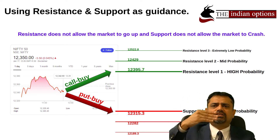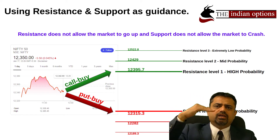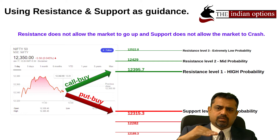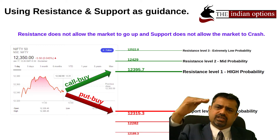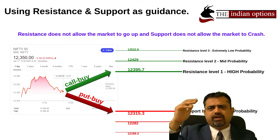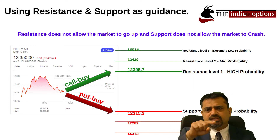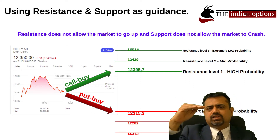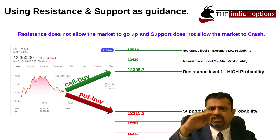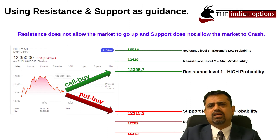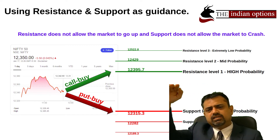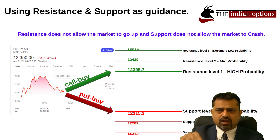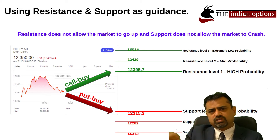Every day the market releases three figures: Resistance Level 1, Resistance Level 2, and Resistance Level 3, and Support Level 1, Support Level 2, and Support Level 3. The chances of hitting the first resistance are very high — around 60 to 70 percent of the time the market could actually hit the first resistance. In rare situations it might cross that and go to the second resistance, and if there is still further momentum, the third resistance. The same applies on the downside with support levels.